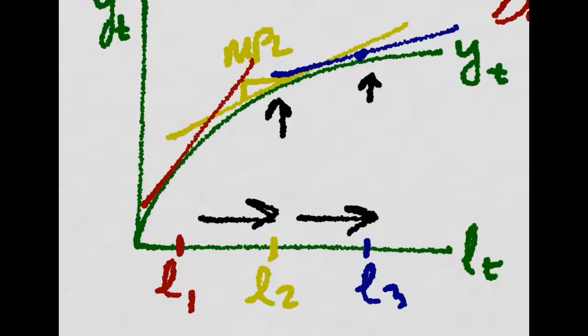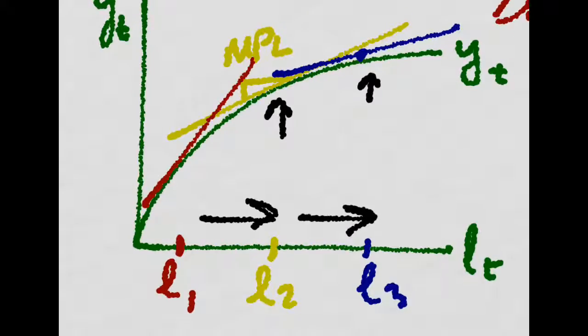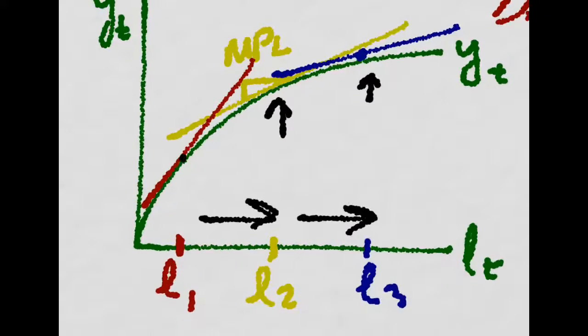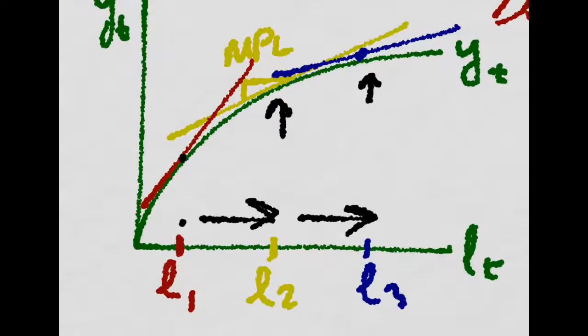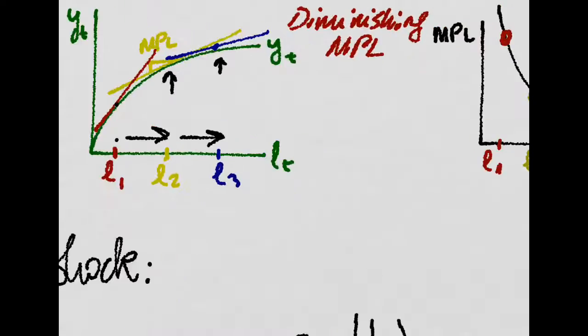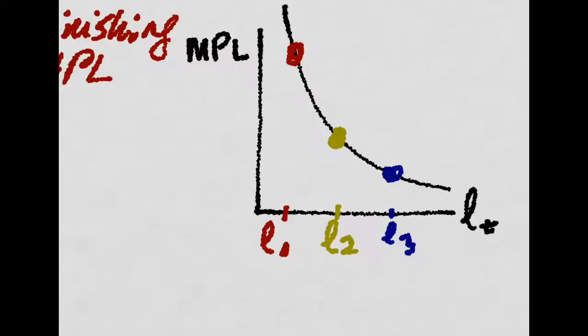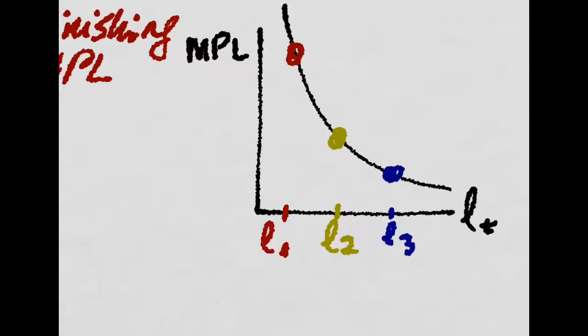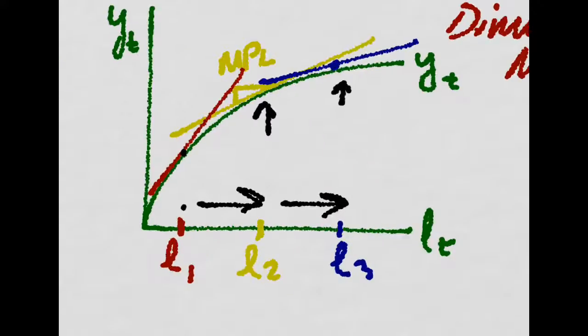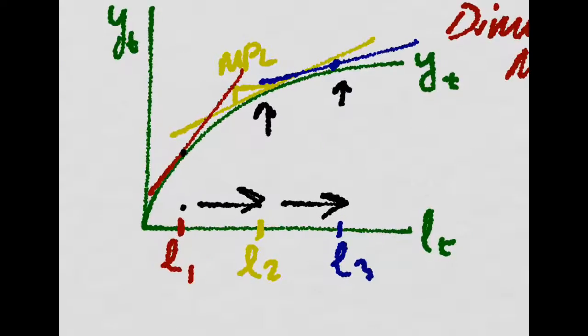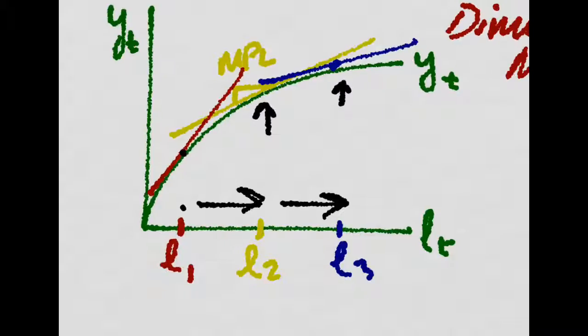then this MPL, defined as the slope of the production function at each level of labor, will be diminishing. There will be diminishing MPL as labor increases, thus MPL will look like this. Remember, MPL is just the slope of the production function at every labor unit.